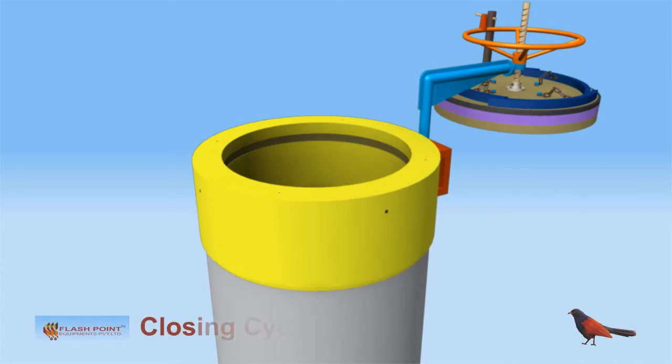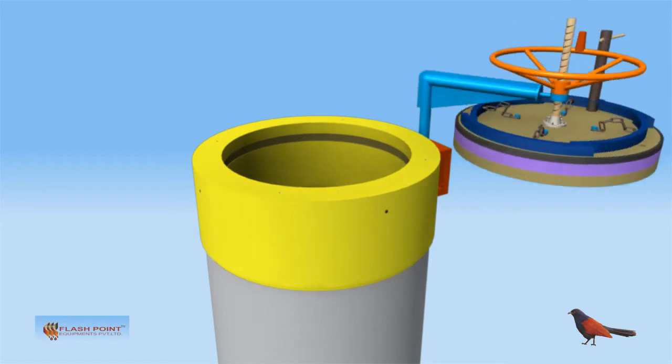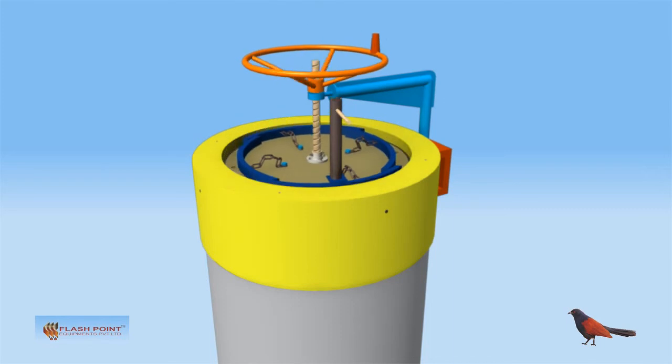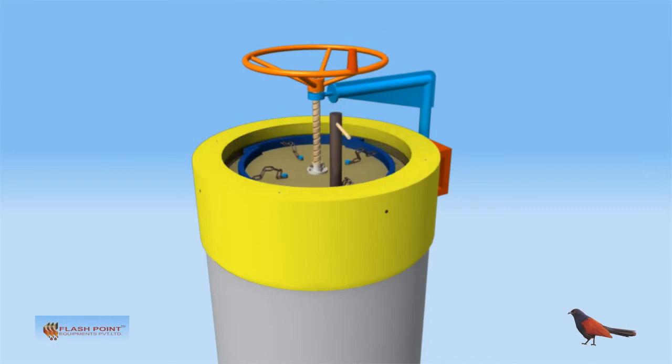Closing cycle of the Flashpoint SEJ4 Lock vertical closure. Swing the david arm till the door is aligned above the closure opening. Rotate the hand wheel in the clockwise direction to lower the door into the housing.